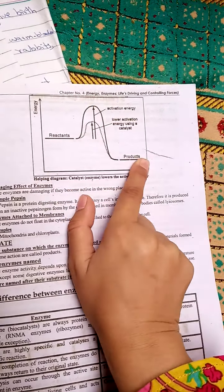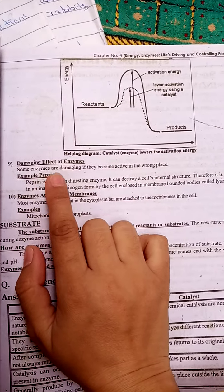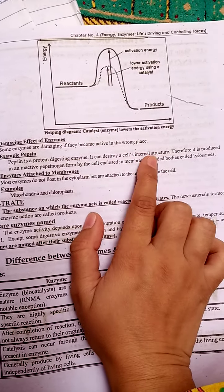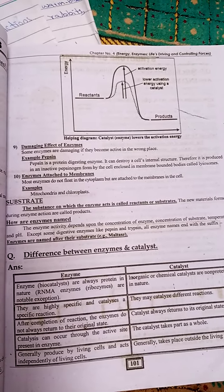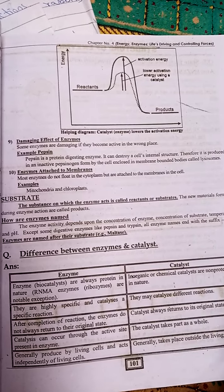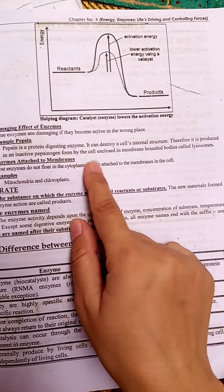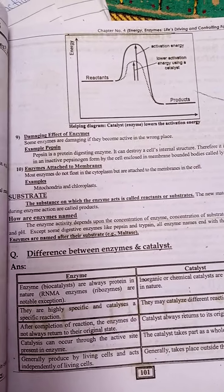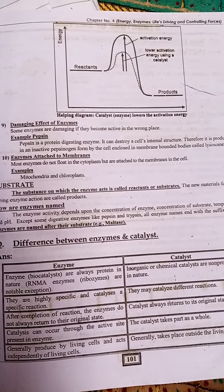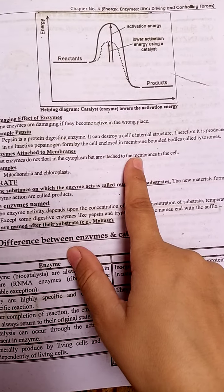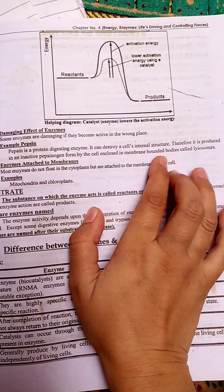Without the enzyme, activation energy is high; with the enzyme as a catalyst, it is lowered. Some enzymes can be damaging if they become active in the wrong place. For example, pepsin is a protein-digesting enzyme — if over-active in the wrong location, side effects such as vomiting and diarrhea can occur, and it can destroy cells' internal structures. Therefore, it is produced in an inactive form called pepsinogen.